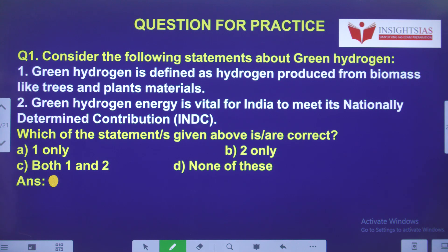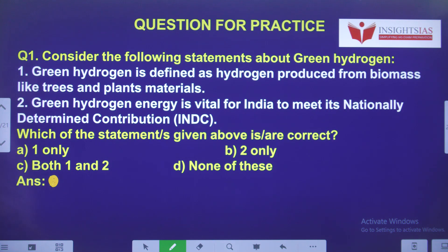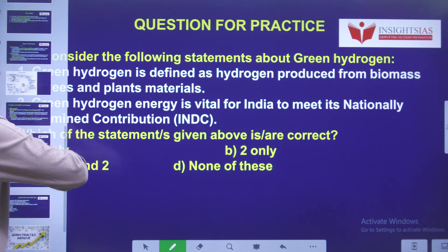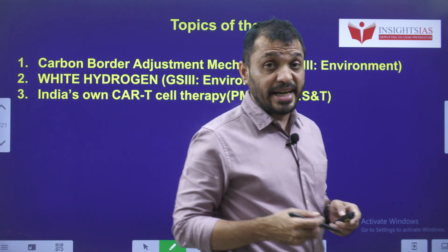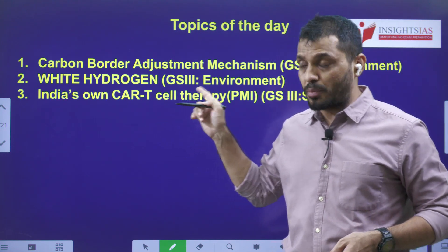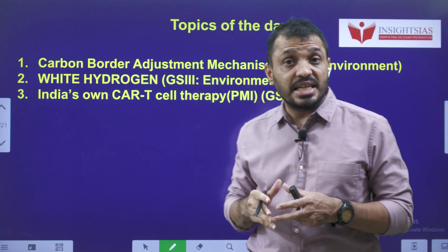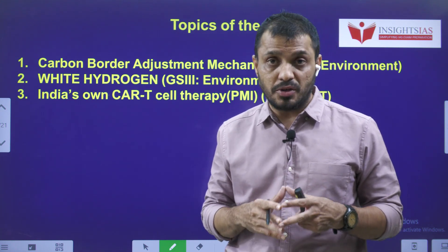Today's question: consider the following statements about green hydrogen. Statement 1: green hydrogen is defined as hydrogen produced from biomass like trees and plant material. Statement 2: green hydrogen energy is vital for India to meet its Nationally Determined Contributions. Pick the correct statement out of these two. In this video we discussed these three topics — a detailed analysis of current issues. Thank you.